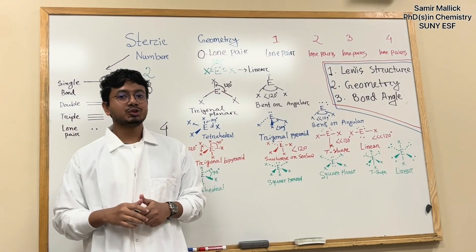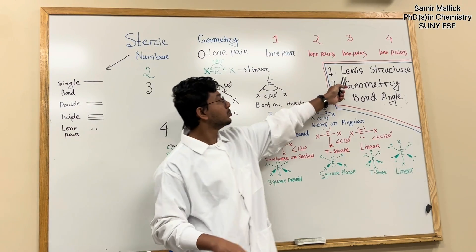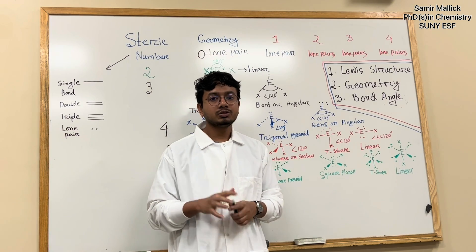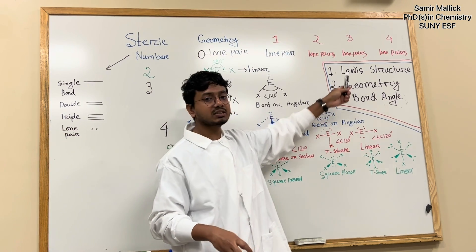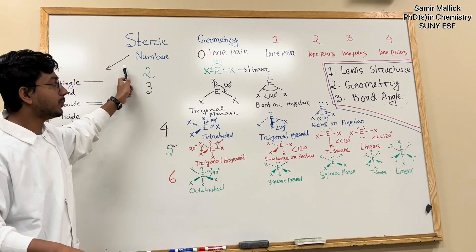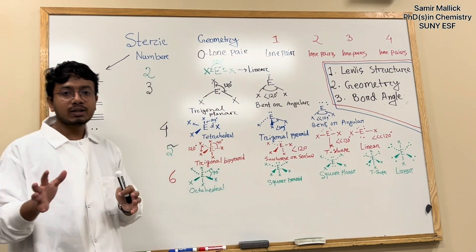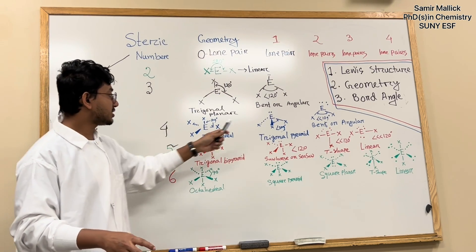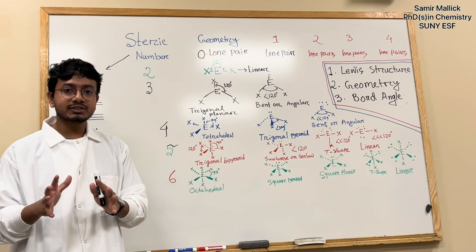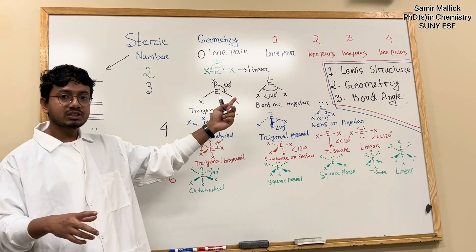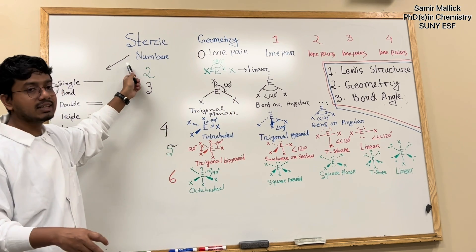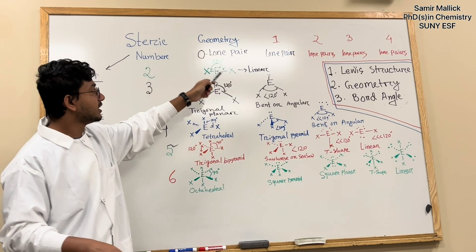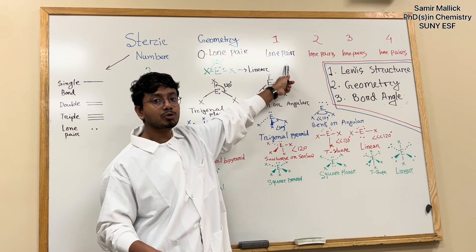Hello, today's video I am going to show you the Lewis structure, geometry, and bond angle of a compound. So first, to determine the Lewis structure, you need to count the steric number. You can see this full whiteboard where I draw a lot of structures. This is just a common concept. Before going to the Lewis structure, you need to know the steric number, then we will look at geometry and the effect of lone pairs.